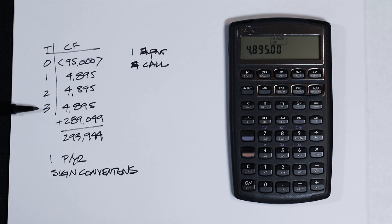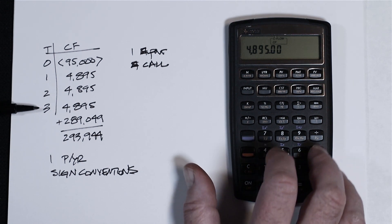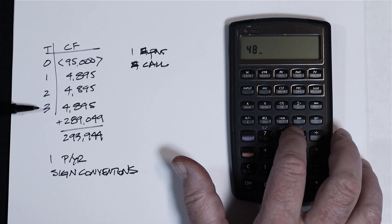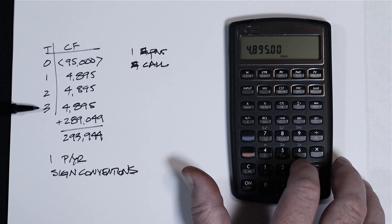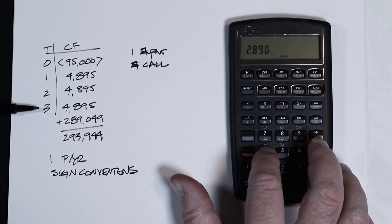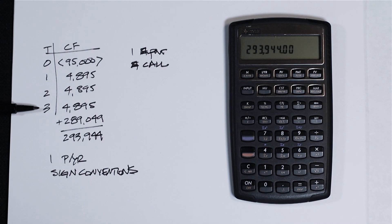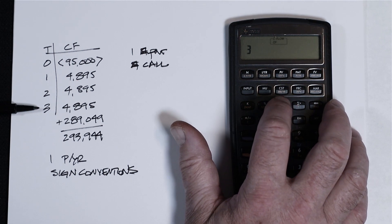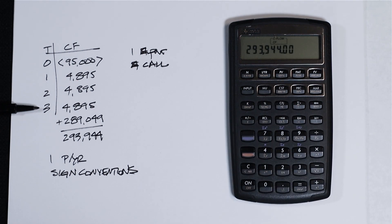And I'll just add these two together on the fly, 4895 plus 289049 equals. Now I have that same value, 293,944, in my calculator. Press CFJ, and that's your entry for time period three.